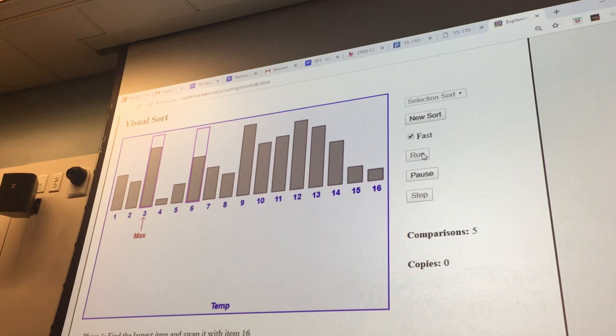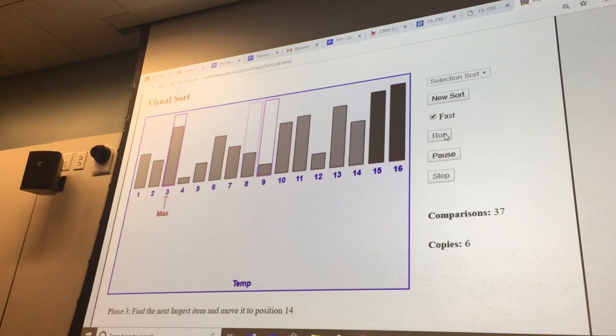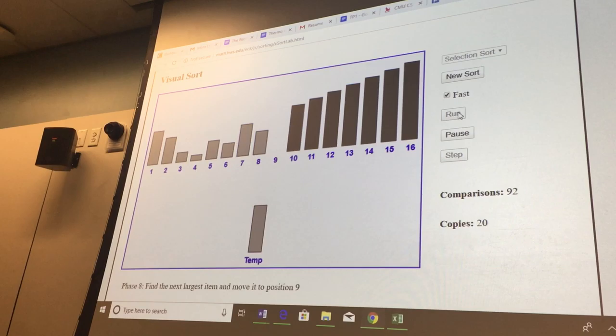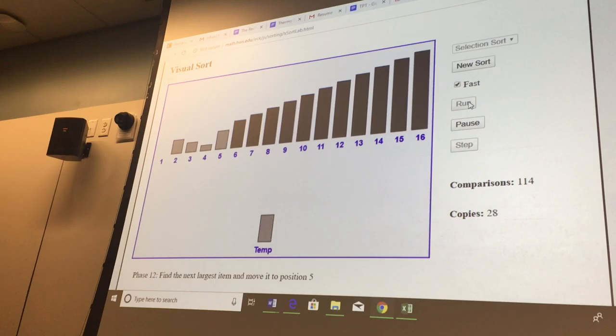I don't get any of this. Like, none of it. Are they even speaking English? So here's selection sort, guys. As you just saw, selection sort takes the largest value, copies it, and then puts it at the back of the list.